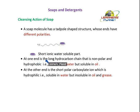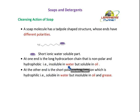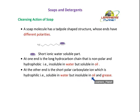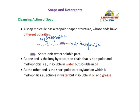In a soap molecule, at one end is the long hydrocarbon chain that is non-polar and hydrophobic — meaning insoluble in water but soluble in oil. At the other end is the short polar carboxylate ion, which is hydrophilic — that is, soluble in water but insoluble in grease and oil. So the hydrophobic part is the long chain, and the hydrophilic part is the ionic end, which is soluble in water.